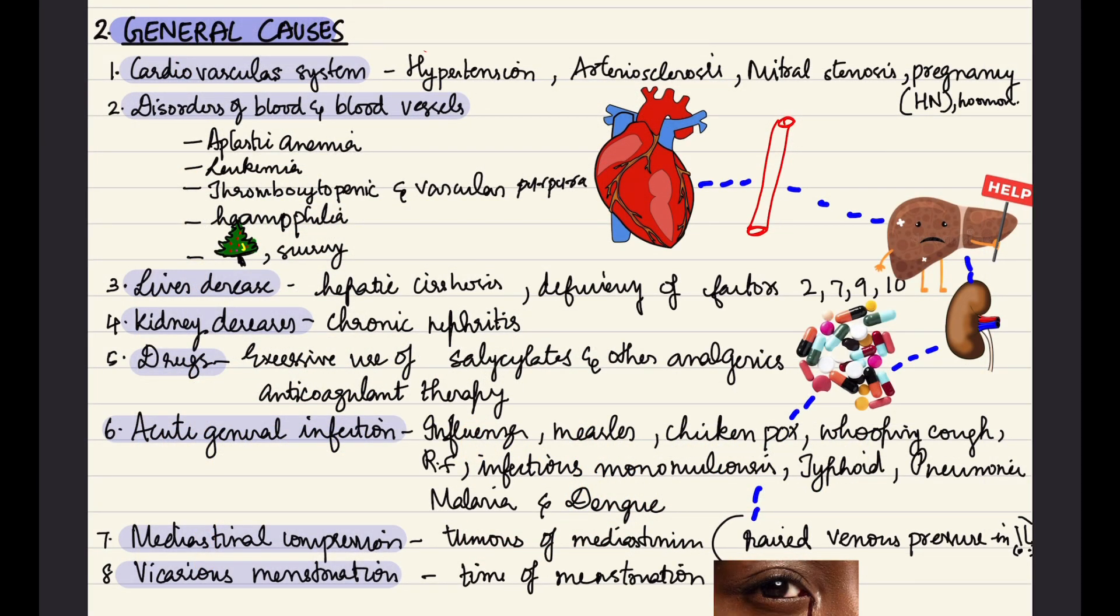Under general causes we have cardiovascular system abnormalities like hypertension, arteriosclerosis, mitral stenosis, pregnancy-induced hypertension, etc. Then we have blood vessel and blood-related disorders like aplastic anemia, leukemia, thrombocytopenic and vascular purpura, hemophilia, Christmas disease, scurvy, etc.